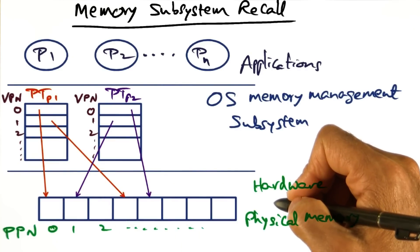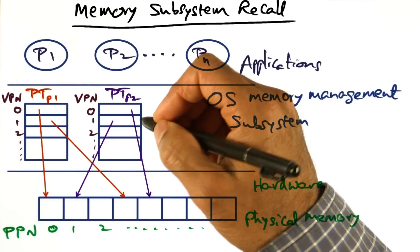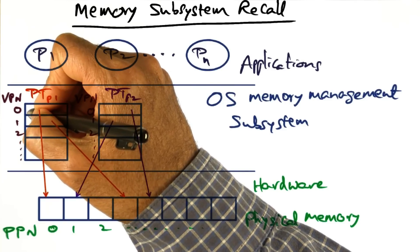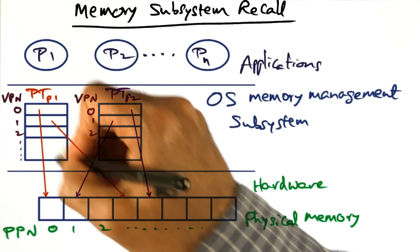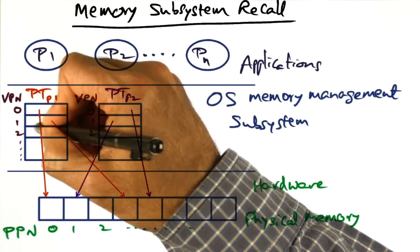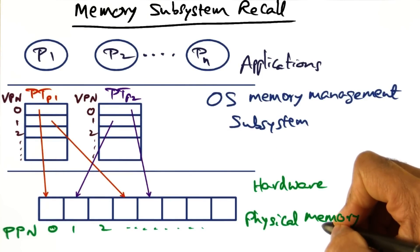That's the advantage you get with page-based memory management: a process's notion of its virtual address space being contiguous is not necessarily reflected in the physical mapping of those virtual pages to the physical pages in main memory.